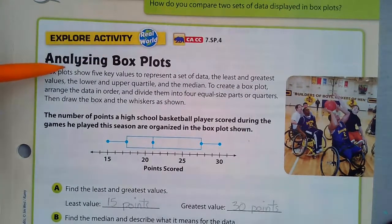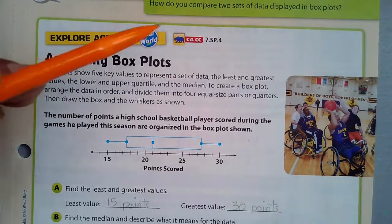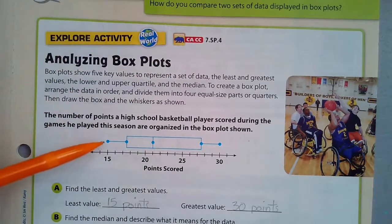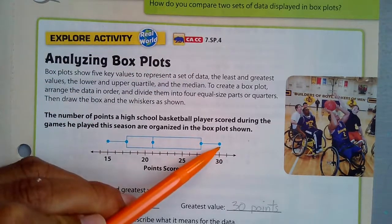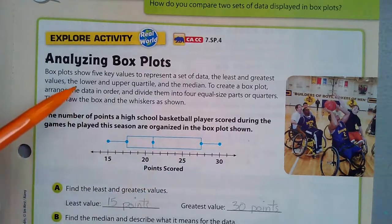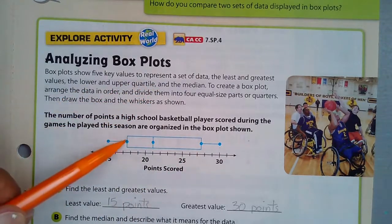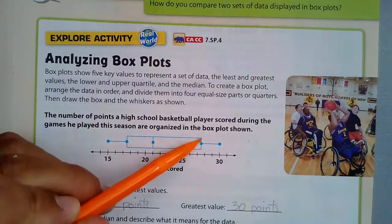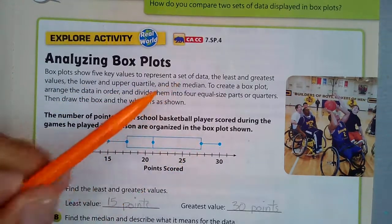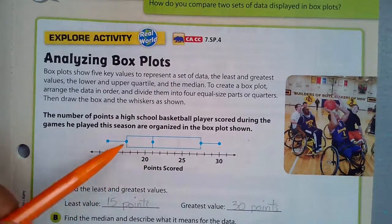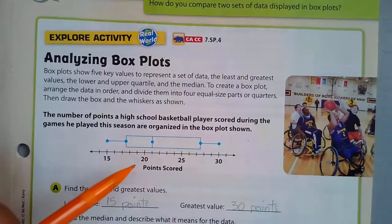Box plots show five key values: the least and greatest values, the lower and upper quartile, and the median. All this is a review from 6th grade.